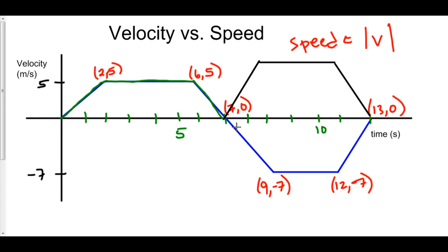So, for example, the speed at time t equals 9 is positive 7. The speed at time t equals 10 is still positive 7. However, the velocity at time t equals 10 is negative 7. And that's the difference between velocity and speed. Speed is the absolute value of velocity.